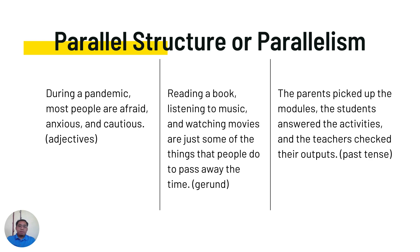In parallel structure or parallelism, here is an example: 'During a pandemic, most people are afraid, anxious, and cautious.' The words being used — afraid, anxious, and cautious — should all be the same part of speech (adjectives). You're not going to use another part of speech if you're describing the pandemic. Next example: 'Reading a book, listening to music, and watching movies are just some of the things that people do to pass the time.' Here, gerunds are used — reading, listening, and watching. You cannot say 'read a book, listening to music, and watch movies' because they are not parallely structured.